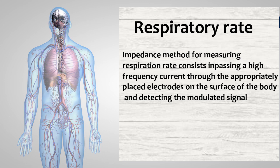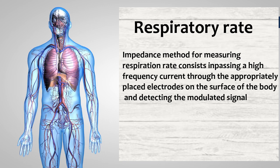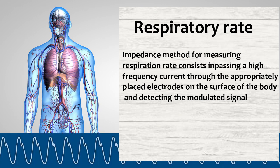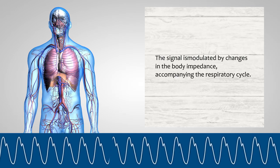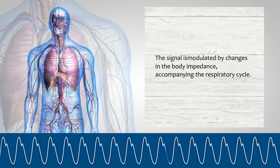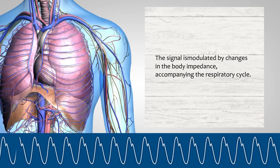The next measurement related to ECG leads is respiration rate. This is an indirect technique for the measurement of respiration rate. Using externally applied electrodes on the thorax, the impedance pneumograph measures rate through the relationship between respiratory depth and thoracic impedance change.